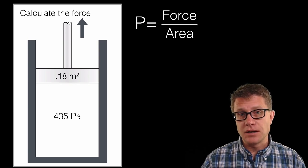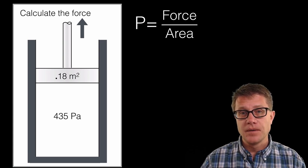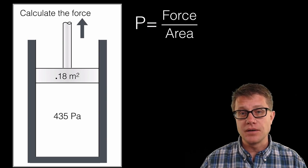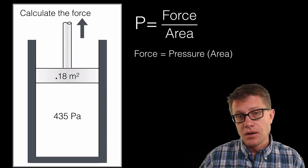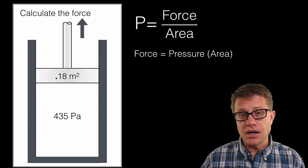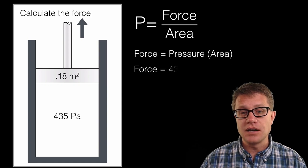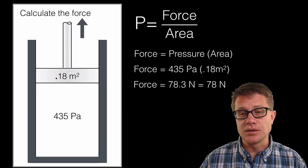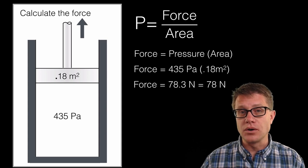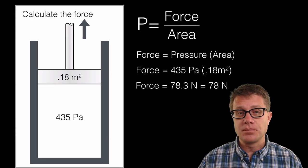So I set up my formula. Pressure equals force over area. I am solving for force. I know pressure and area. And so this is a pretty easy problem. So I will multiply both sides by area so I can isolate force on the left side. And then I simply calculate it by multiplying those two values. So it would be a 78 newton force exerted on that piston.